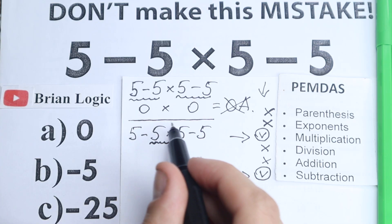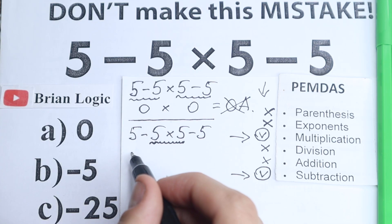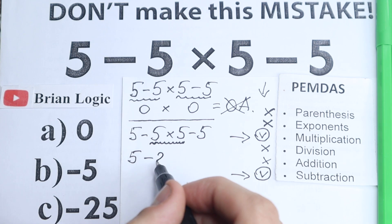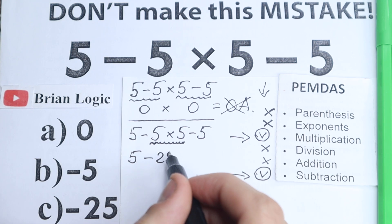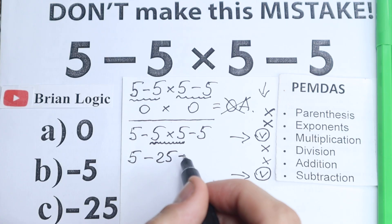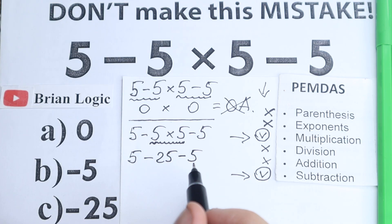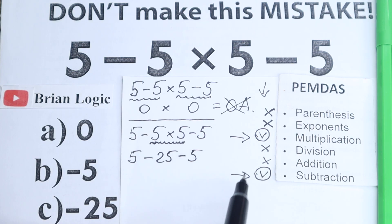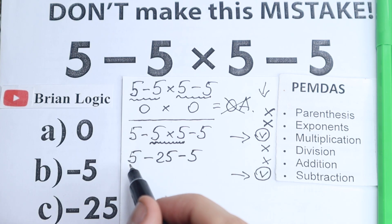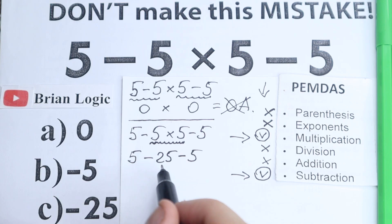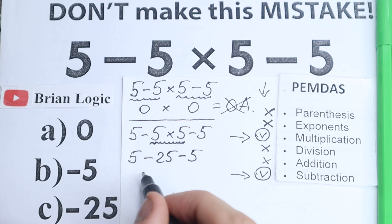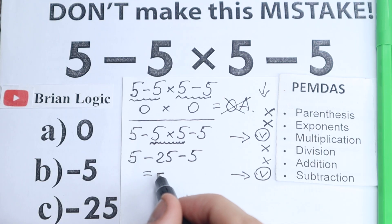So: 5 minus 5 times 5 minus 5. We multiply 5 times 5 first, which equals 25, giving us 5 minus 25 minus 5. Now subtraction: 5 minus 25 equals negative 20, and negative 20 minus 5 equals negative 25. So the answer is negative 25.